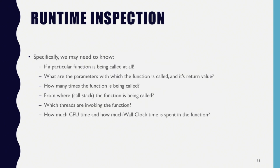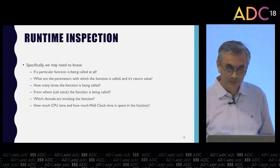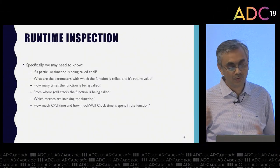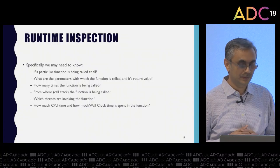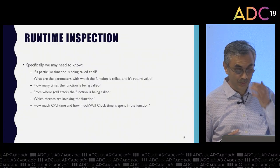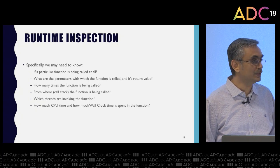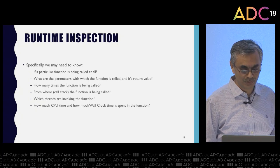More specifically, we may need to know if a particular function is being called at all. We may need to know the parameters with which it is being called and what is the return value. We may need to know how many times the function gets called, the call stack, which threads are invoking the function, and how much CPU time versus wall clock time that function is consuming — because the two may be different. Your function may be blocked or waiting for something and you need to know that.